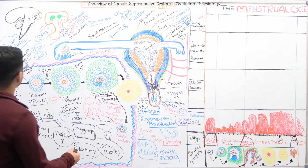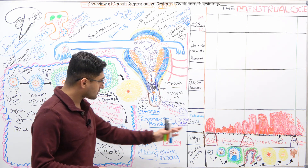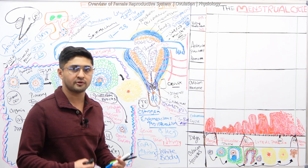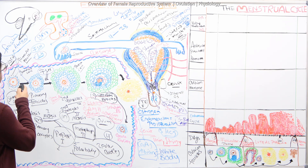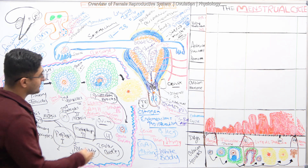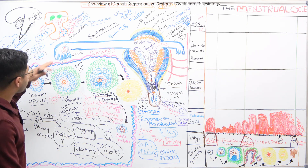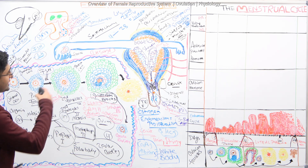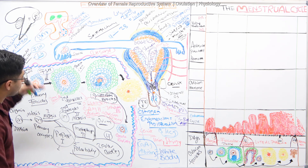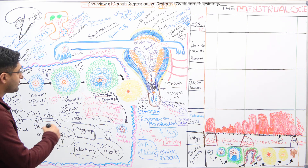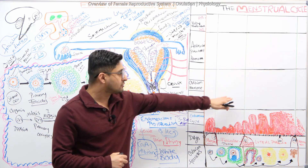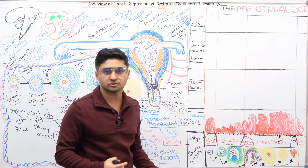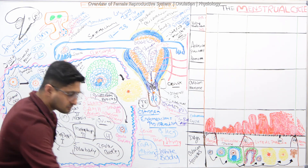When we talk about the reproductive systems of females and the physiology of it, we always have to talk from the hypothalamus, the pituitary, the ovary, and then the uterus axis — because we have to talk about what is happening at each location. So we're going to briefly talk about what is happening in each area and then draw the menstrual cycle.